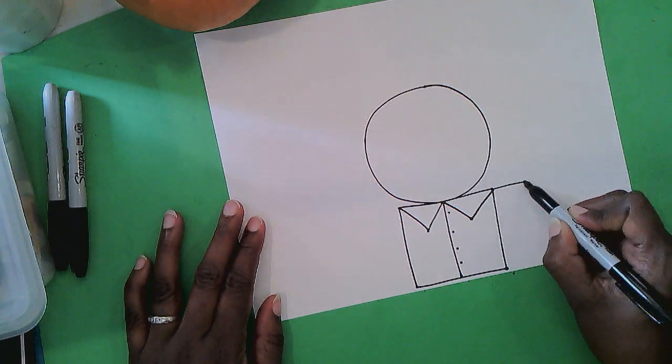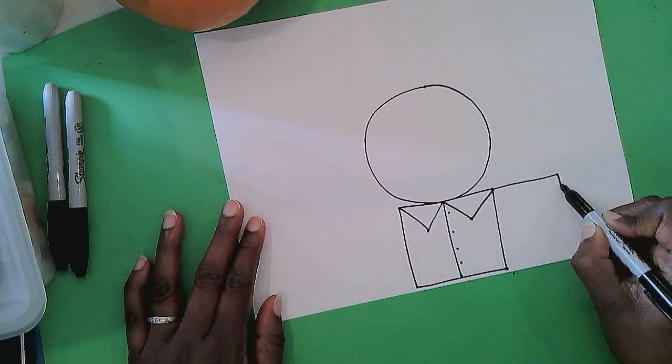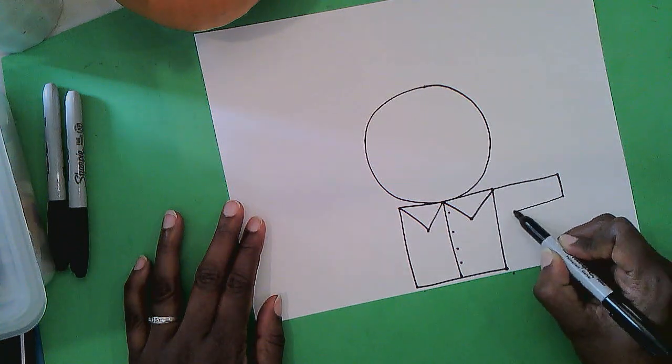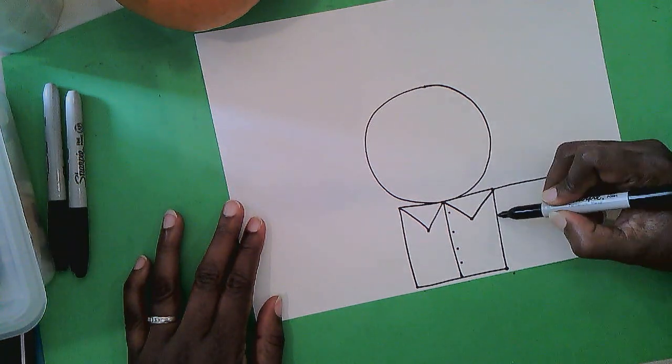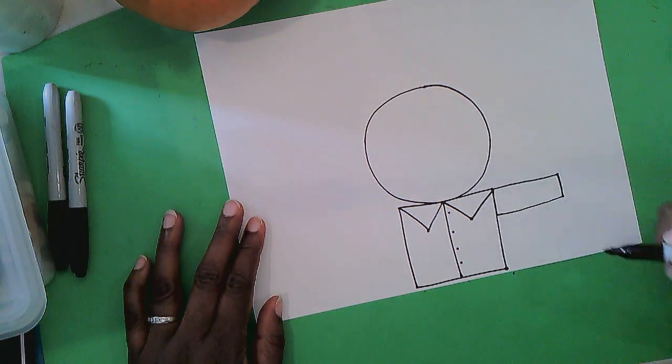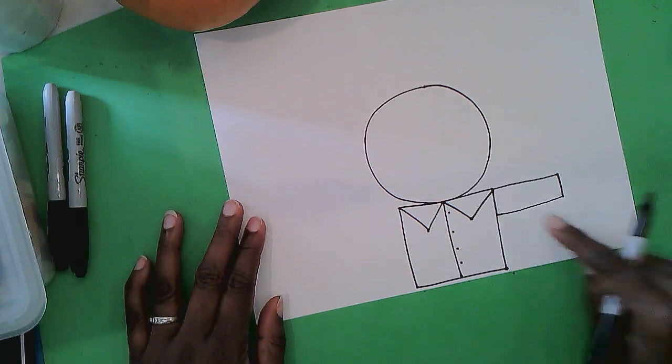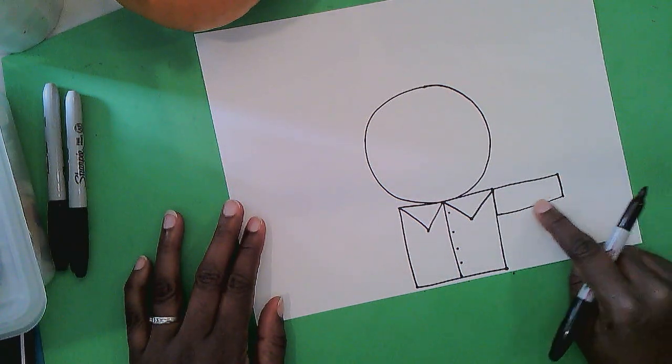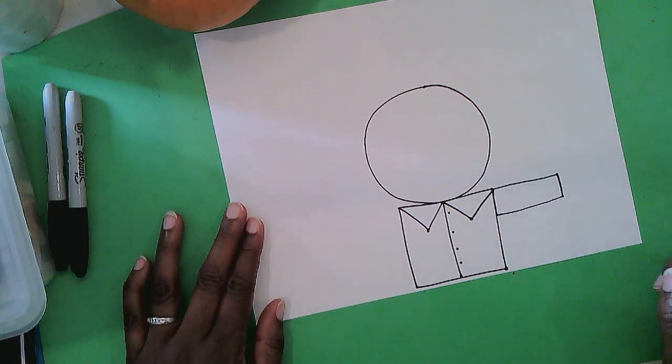Next let's add a rectangle right at the top of the square. Right here at this top corner. Go over, down, and back across to make your rectangle.